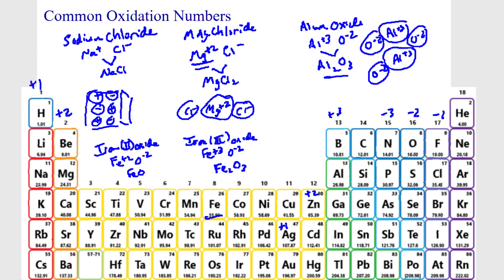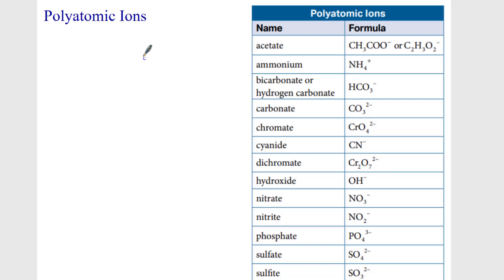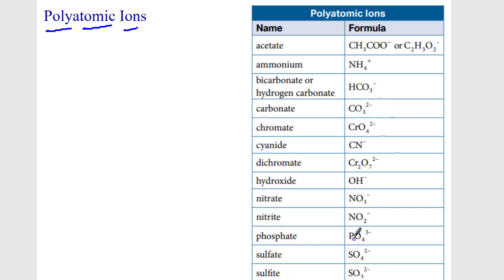We also have things called polyatomic ions. Polyatomic means exactly what it says — poly means many, so many-atom ions. You'll get a chart of many-atom ions and you'll be able to write any kind of chemical formula using your polyatomic ions. Keep in mind, CO3 as a whole has a negative two charge — that's carbonate. PO4, the whole thing, has a negative three charge — that's phosphate.